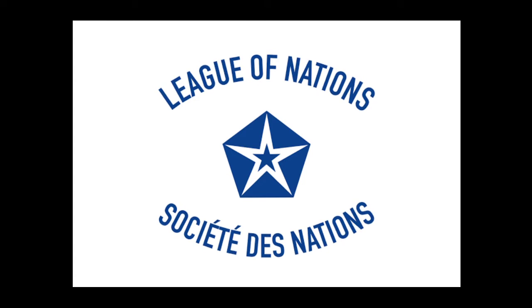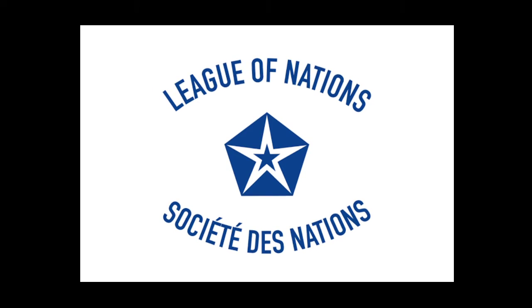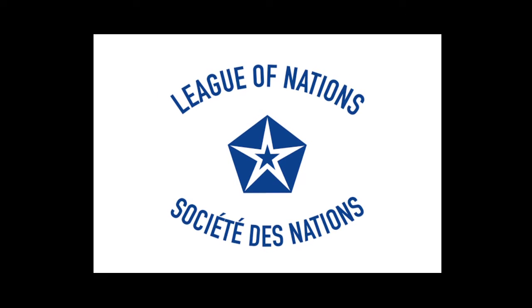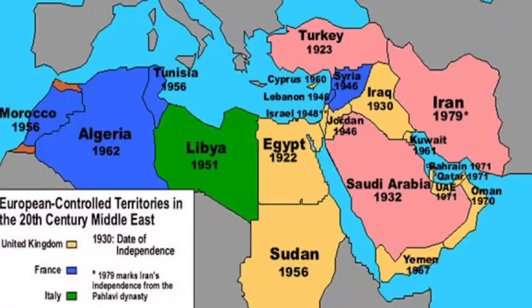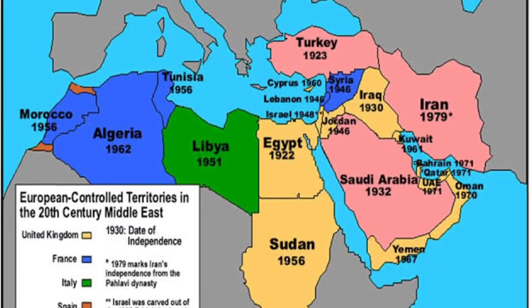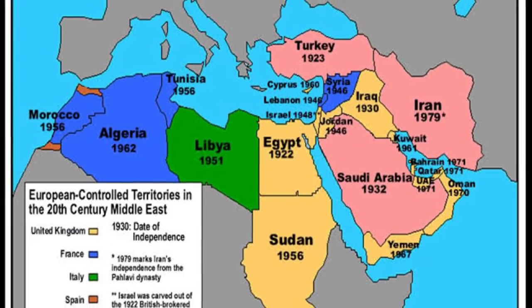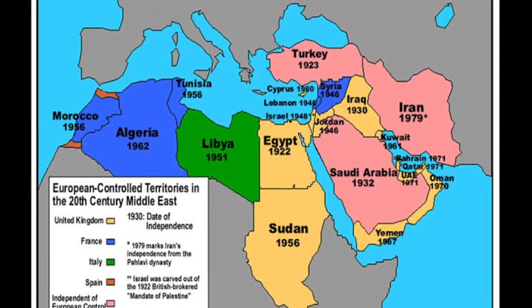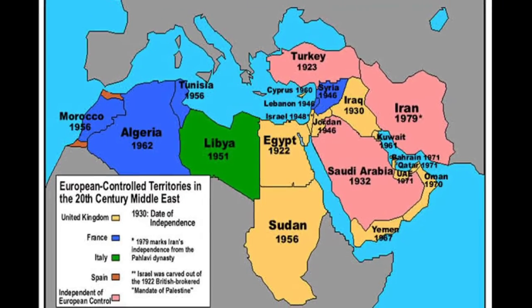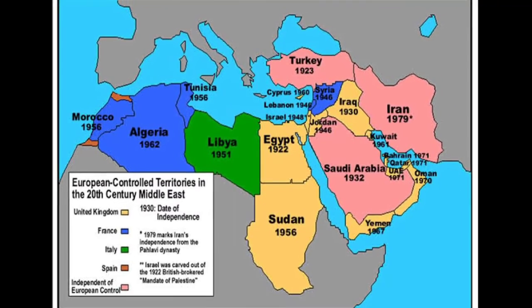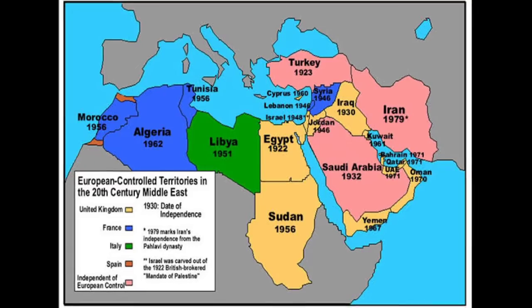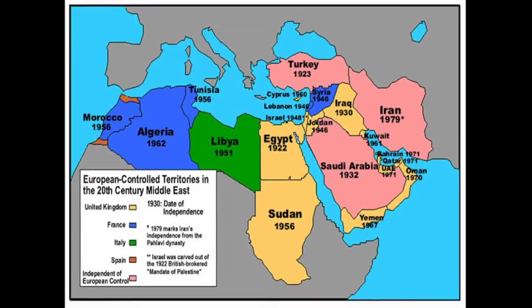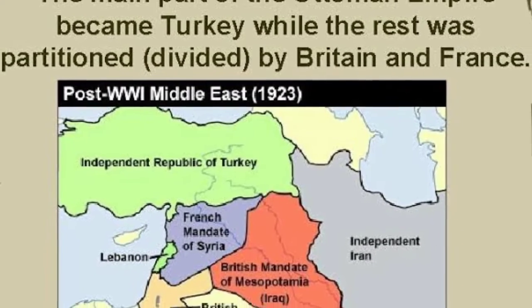The League of Nations mandate granted the French mandate for Syria and the Lebanon, the British mandate for Mesopotamia — later Iraq — and the British mandate for Palestine, later divided into mandatory Palestine and the Emirate of Transjordan from 1921 to 1946.